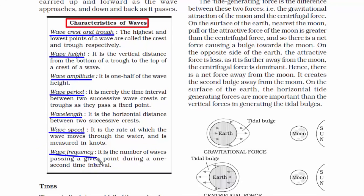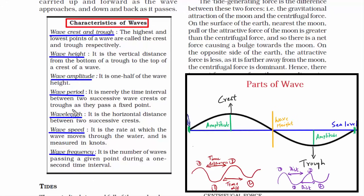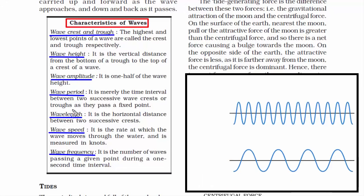Wave frequency is the number of waves passing a given point during a one-second interval. One complete cycle of a wave — the number of cycles you can see in one second forms a high-frequency wave; fewer cycles means a low-frequency wave. Therefore wave frequency totally depends on wave period: the difference between two crests or two troughs determines the frequency.